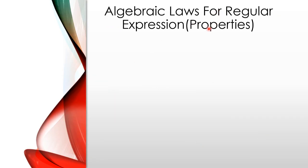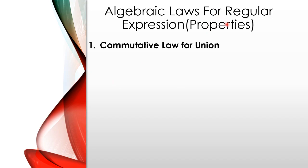These can also be called properties for regular expressions. There are two operations possible: union and concatenation. Union is denoted by plus, and concatenation means one followed by another, denoted by dot. We will discuss commutative law for the union operation. Union is commutative: L plus M is equal to M plus L.